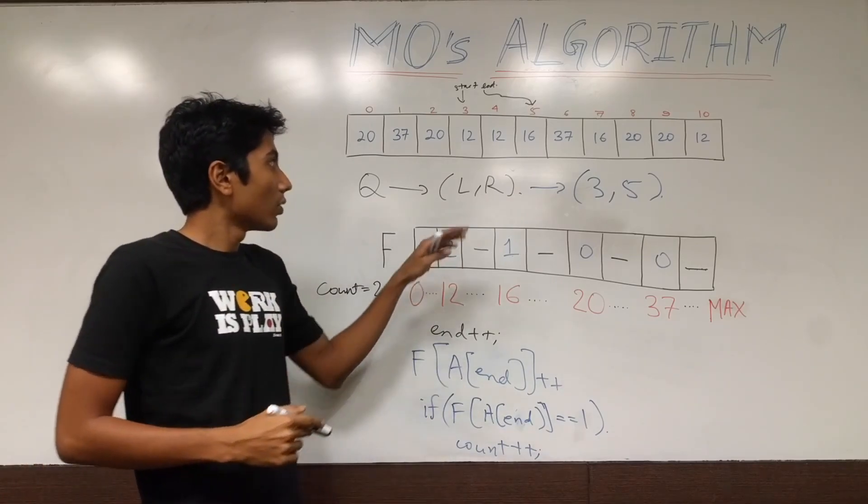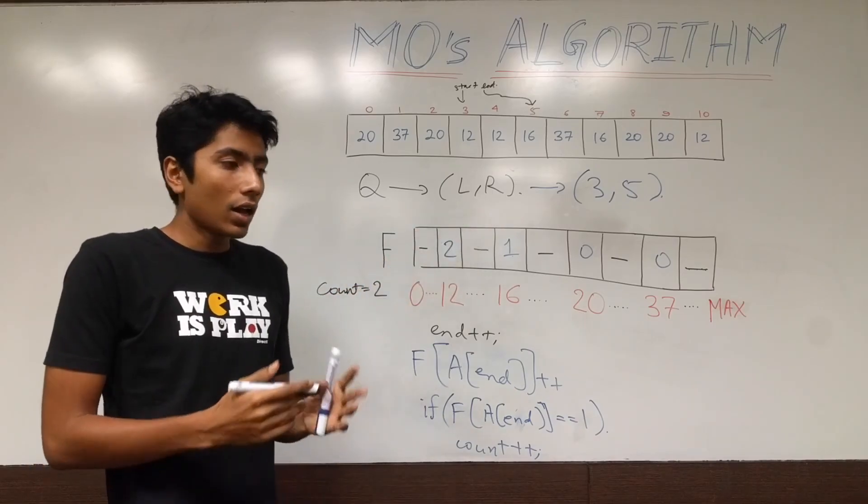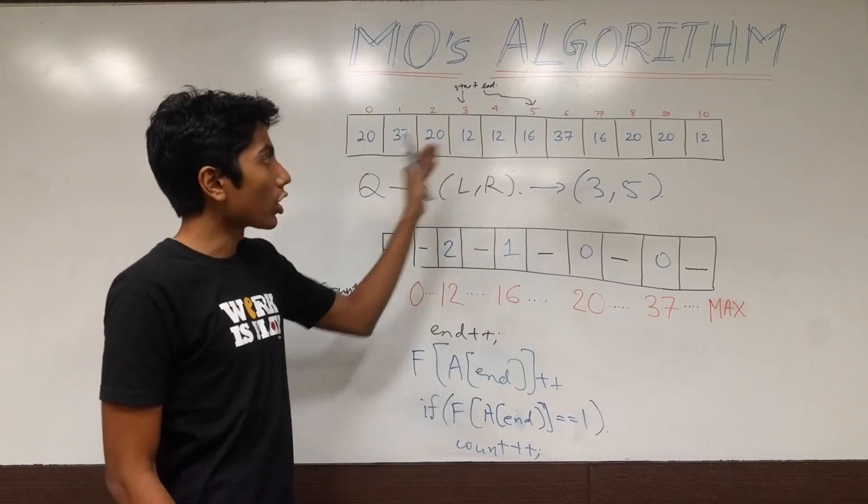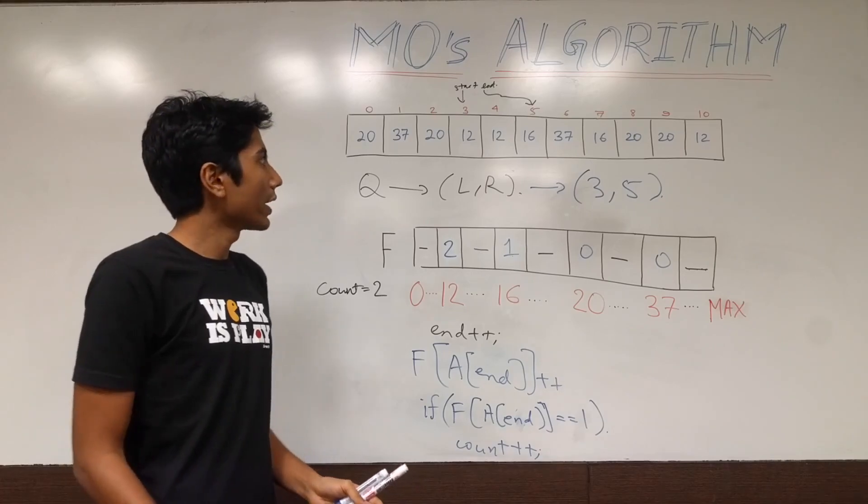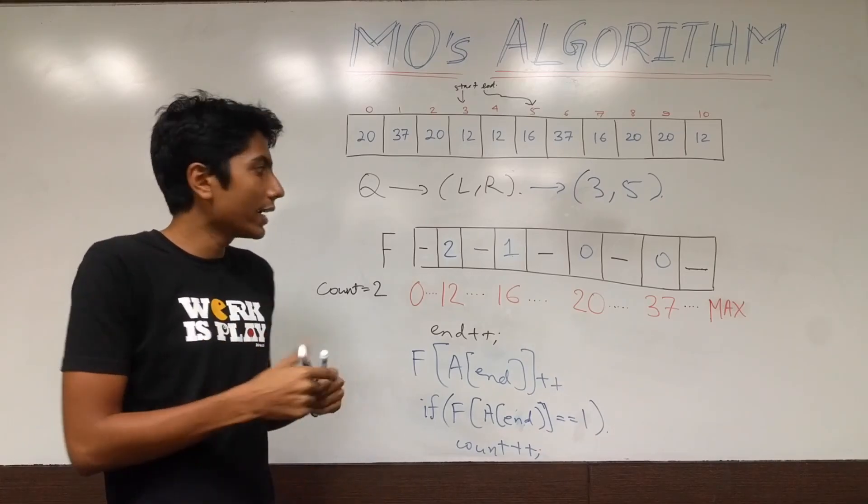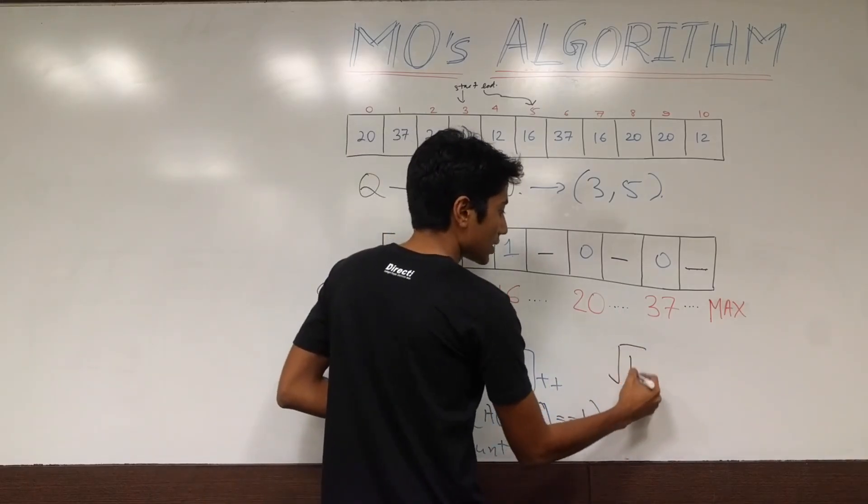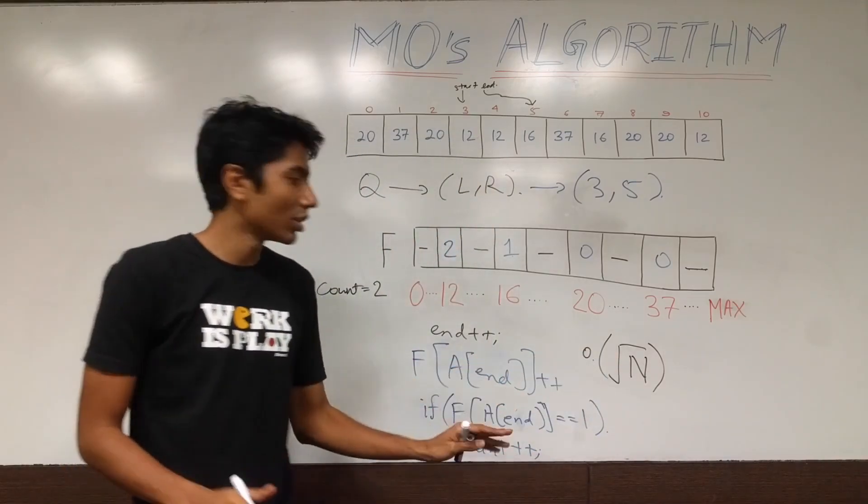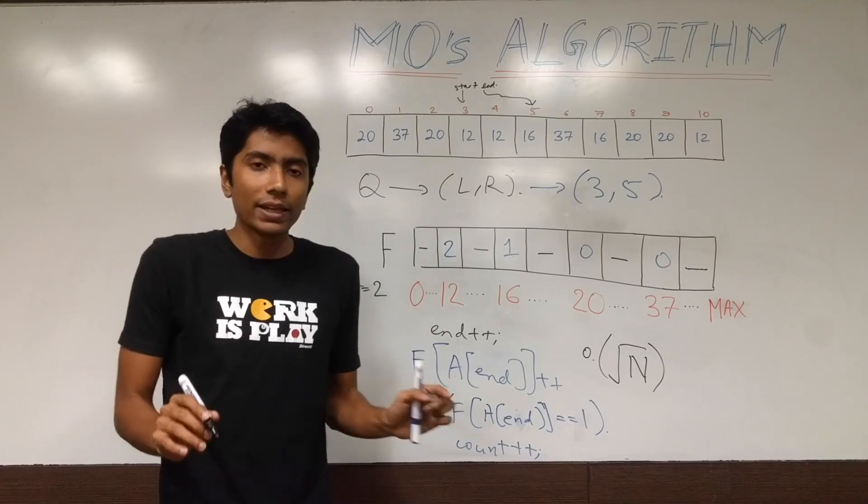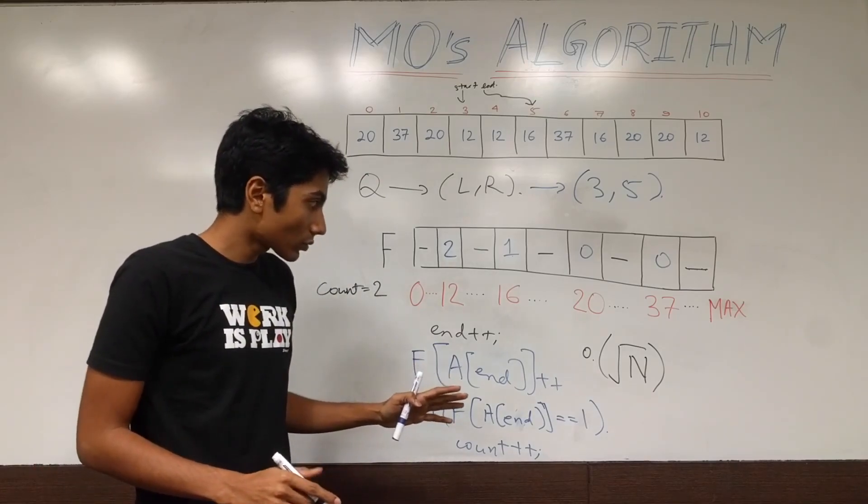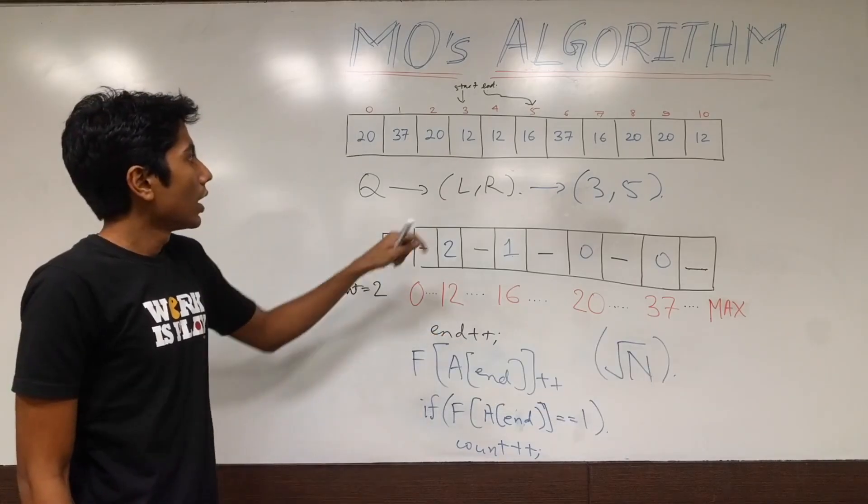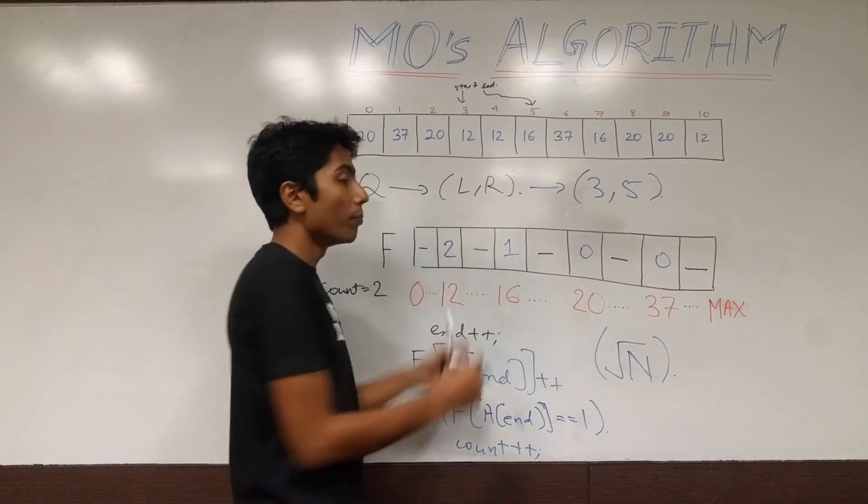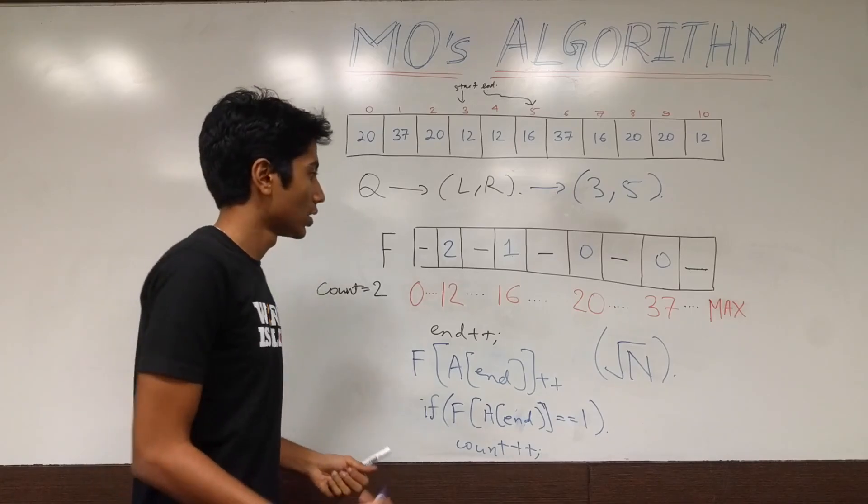Now, when I mean sort by left index, it's a little special. Logically, what you are going to do is, you are going to break your original array into blocks. You are going to break the original array into blocks of size square root of n. Because this is the optimal number that you will get. If you do some differentiation and all that, then you will understand that square root of n is the best that you can take.